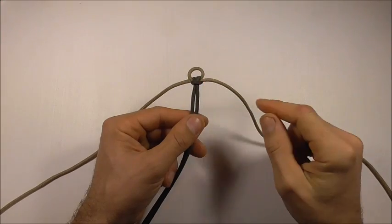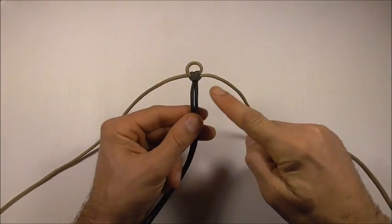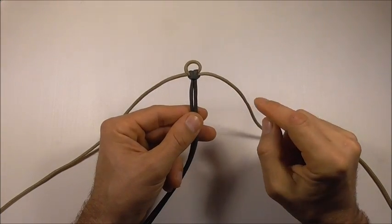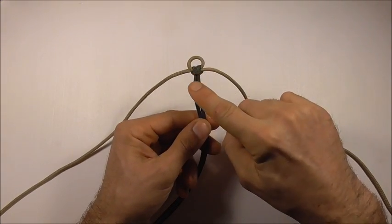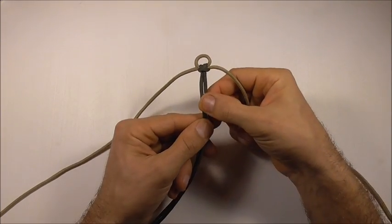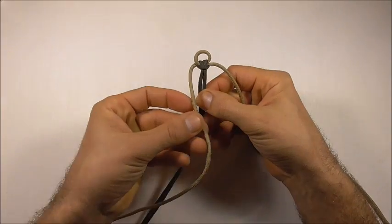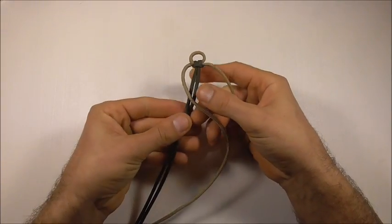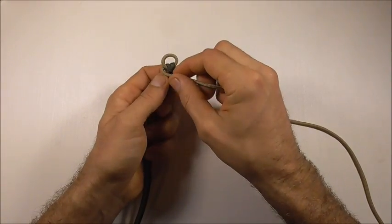So once you've set your loop, we can start our weave. And the way we're going to do this is we're going to treat it exactly like a three-strand flat braid, except we're going to treat these two center strands as a single strand.